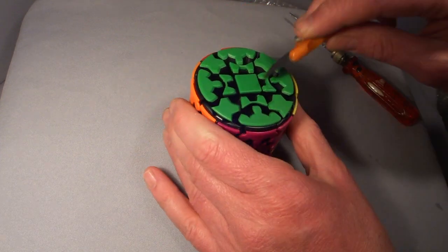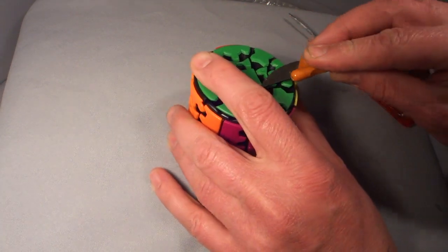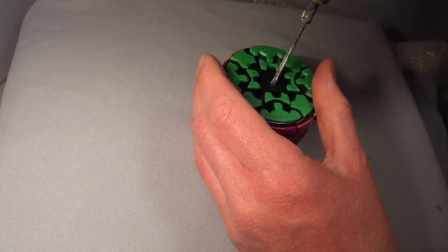I will now take the puzzle apart. Simply remove a centre tile and undo the screw. The rest is pretty obvious.